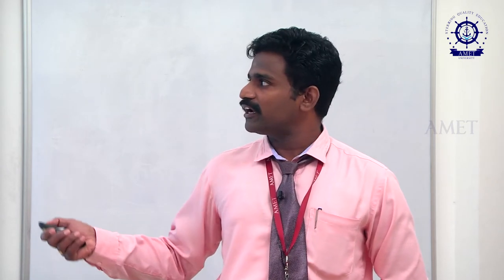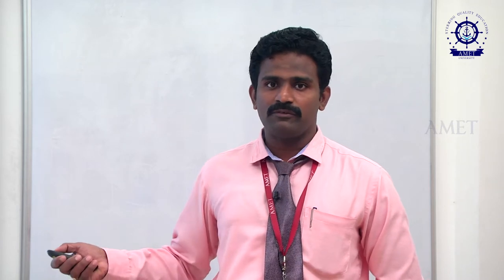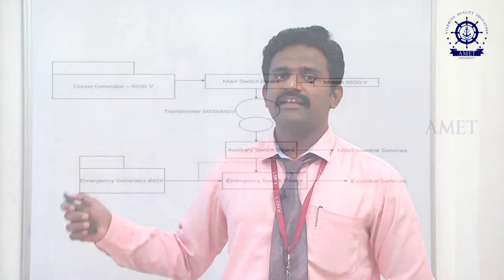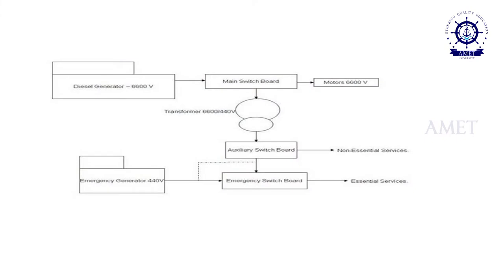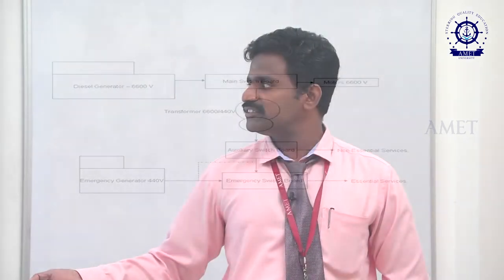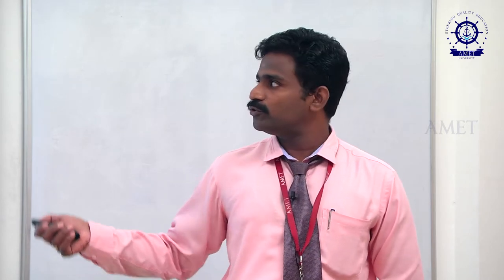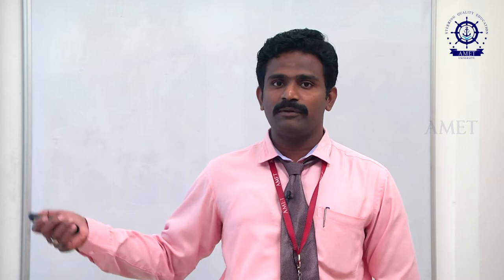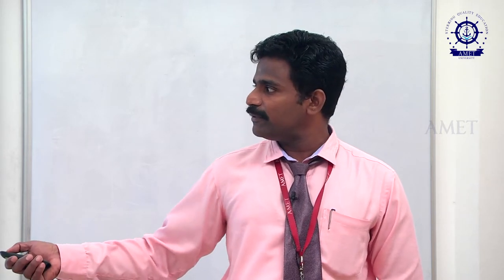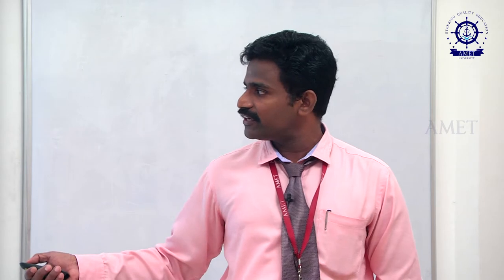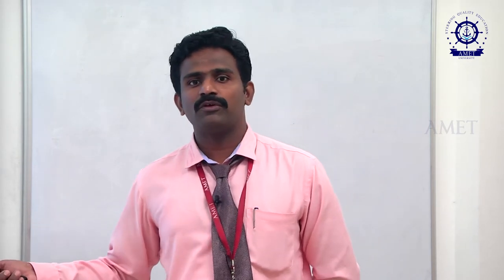When the power to the main switchboard is cut off, automatically within the next 3 to 45 seconds, the emergency generator will turn on and supply power to the emergency switchboard. When the supply is cut off, the emergency generator turns on, and the interlock between the two switchboards opens. Then the interlock between the emergency generator and the emergency switchboard closes. This is the main working operation.